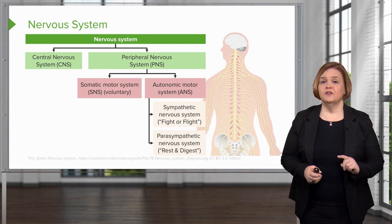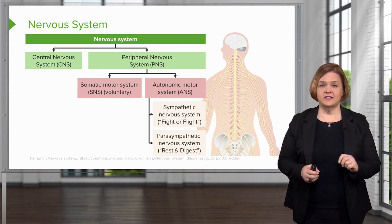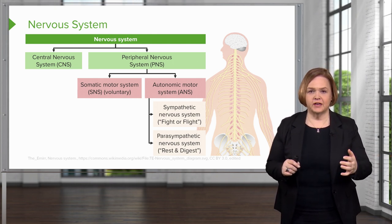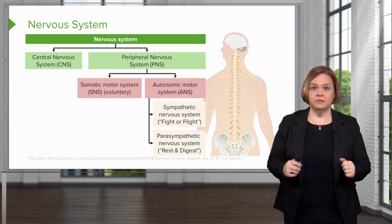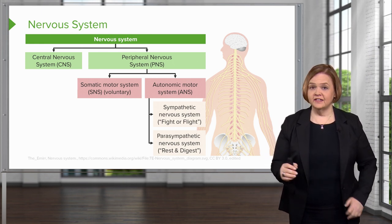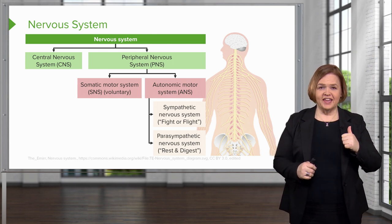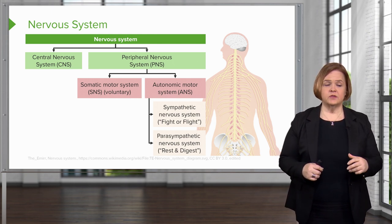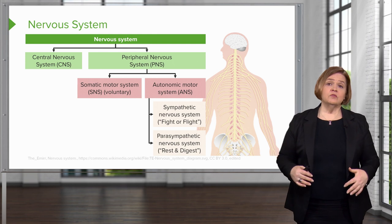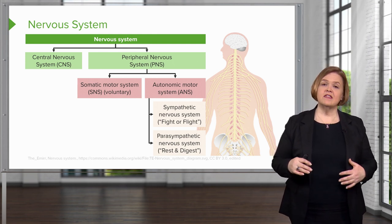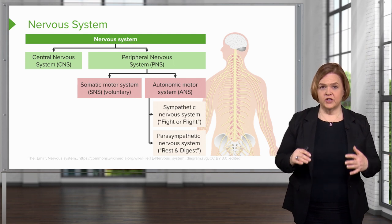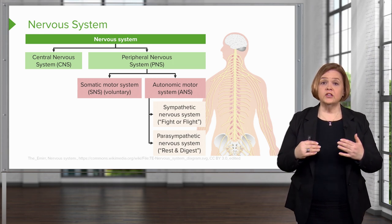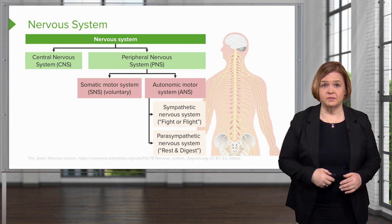The sympathetic nervous system is that response in your body — if I was about to step out into traffic and I saw a truck was about to hit me, that's the response my body gets. I'm either going to fight or I'm going to flight. The parasympathetic nervous system is when I'm totally at rest, I can just focus on eating a big fat meal — that's why we call it rest and digest. Those are the two key components of the autonomic nervous system.